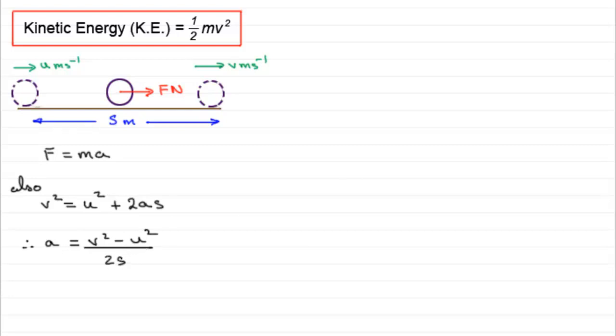Now if we call this equation up here f equals ma, say equation 1, and we substitute our value for a into 1, what we end up with is that the force f equals the mass times v squared minus u squared all divided by 2s.